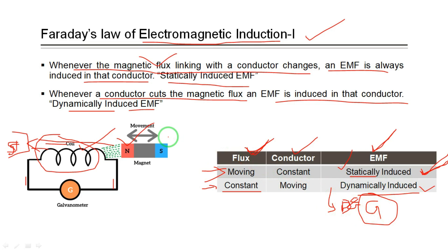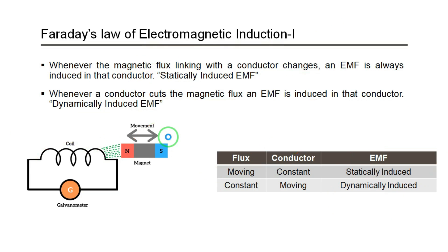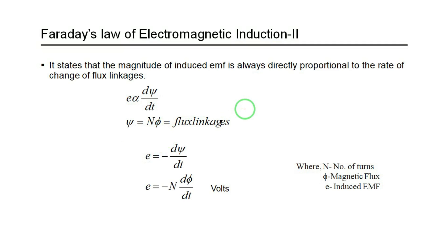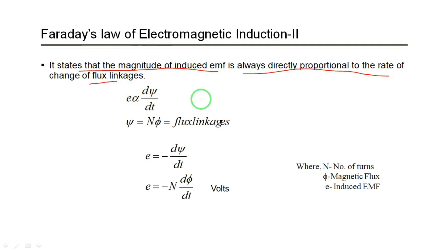To summarize: statically induced EMF application is the transformer; dynamically induced EMF application is the DC generator. This is Faraday's Law 1. In Law 2, we calculate how much EMF is induced. The second law states that the magnitude of induced EMF is directly proportional to the rate of change of flux linkages.